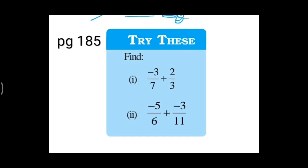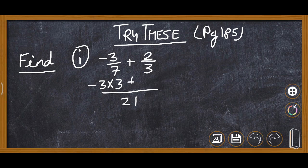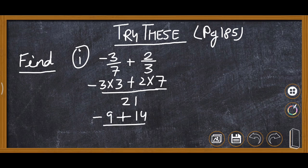This is another Try These on the same page 185. Here the denominators are different. For the first question, denominators are 7 and 3, so the LCM is 21. We multiply -3 by 3 to get -9, and 2 by 7 to get 14, all over 21. Then 14 - 9 = 5, so the answer is 5/21.